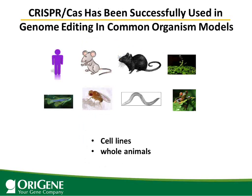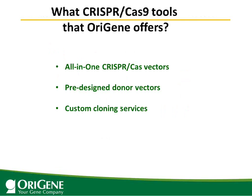CRISPR-Cas9 has been successfully used in genome editing in common organism models including human, mouse, rats, plants, fish, flies, worms, and frogs. You can do genome editing in cell lines or in whole animals. Next, since CRISPR-Cas9 is such an efficient and simple genome editing tool, I'll discuss what OriGene can offer to help your CRISPR-Cas project.